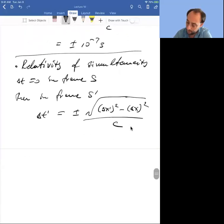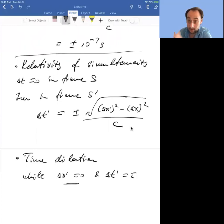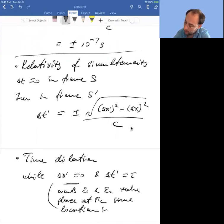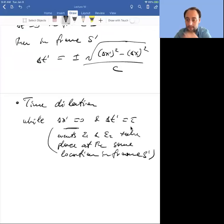Time dilation, no problem. While delta x prime equals 0 and delta t prime equals tau, so events take place at the same location. Remember time dilation, events 1 and 2 take place at the same location in frame S prime. That's when the time dilation formula, that's the standard scenario for time dilation.